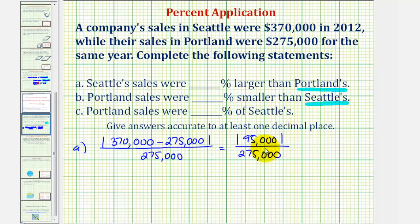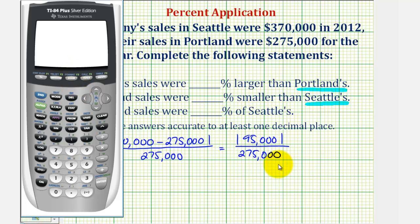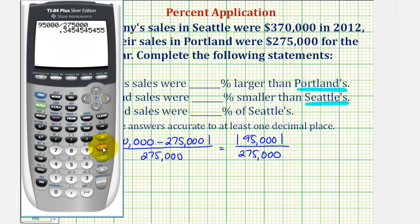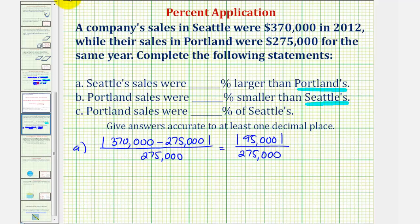Now we'll convert to a decimal and then a percent. The absolute value of 95,000 is just 95,000. We divide this by 275,000, which gives us the decimal value. To convert to a percentage, we multiply by 100 and add a percent sign. Rounding to one decimal place — the four in the hundredths place indicates round down — so our answer is approximately 34.5%. Seattle's sales were approximately 34.5% larger than Portland's sales.